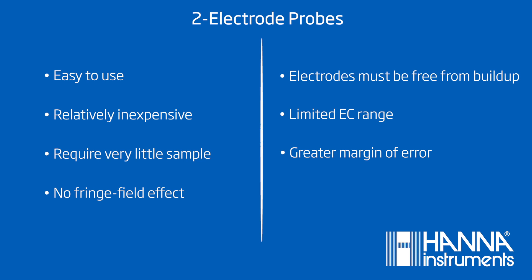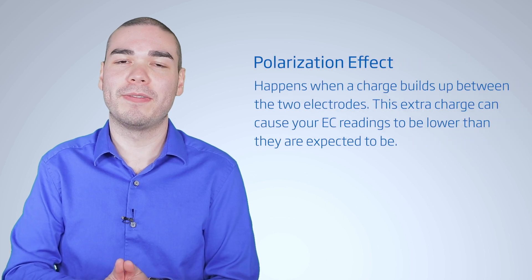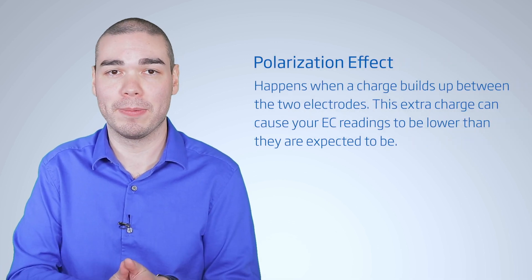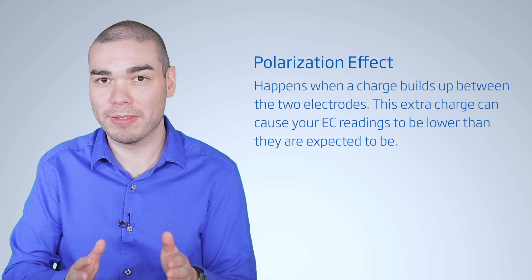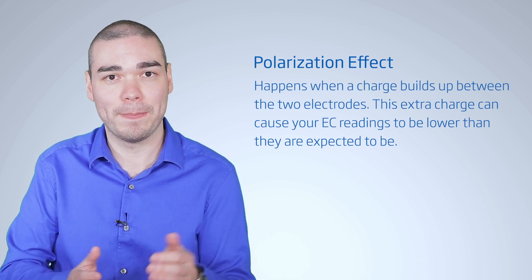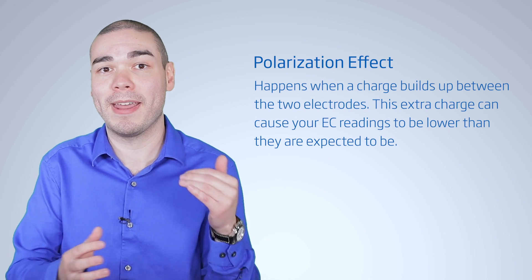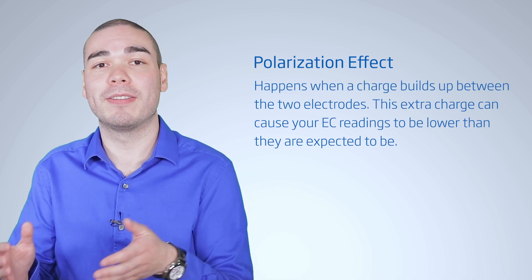Something to be aware of with two-electrode probes are that the space between the two electrodes has to be stable. If the electrodes get bent, or if a residue builds up, you will get inaccurate readings. Each probe only covers a limited EC range, so if you're testing low-range and high-range samples, you will need to buy multiple probes and/or meters. The last thing to note on two-electrode probes is something called polarization effect. The polarization effect happens when the charge builds up between the two electrodes. This extra charge can cause your EC readings to be lower than they are expected to be. This can be minimized by two-electrode probes that have their electrodes made out of graphite instead of stainless steel.